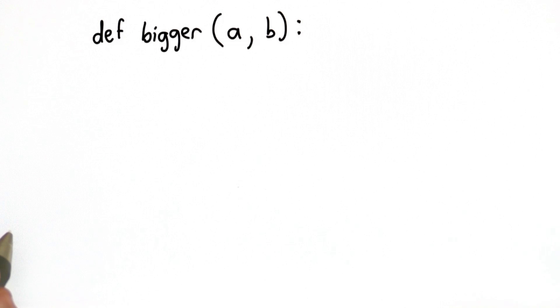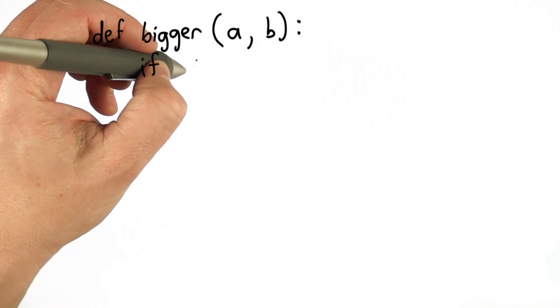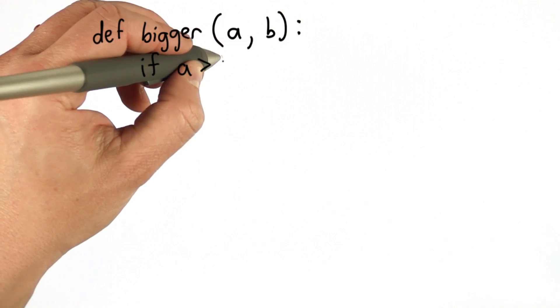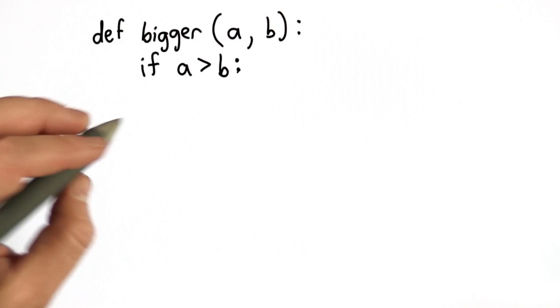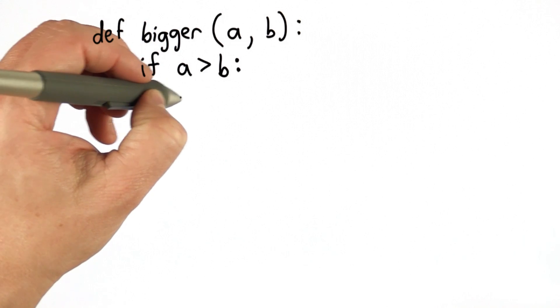And now we want to use a test to figure out which one is bigger. We're going to use a comparison, so we're going to see if A is greater than B. Then we want the result to be the value of A. That's the bigger one, so we'll return A.